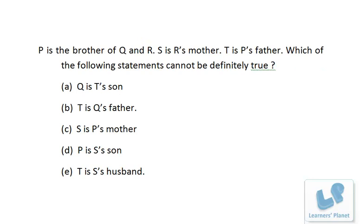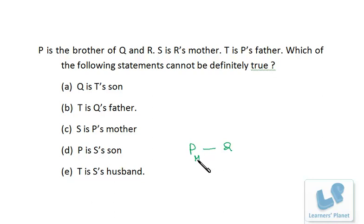The first question: P is brother of Q and R. S is R's mother. T is P's father. The first step is to arrange the persons according to their generations. P is brother of Q and R, so P and Q are siblings. P is brother, meaning P is male — write M for male and F for female. Q and R we do not know whether they are male or female, so leave them as they are. S is R's mother, so S is in the previous generation and is female. T is P's father, so T is male.